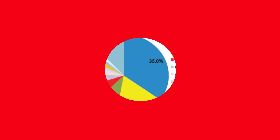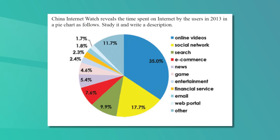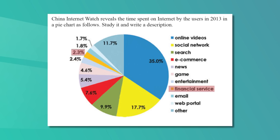You can check your workbook for similar activities. Turn to Unit 5, page 55, activity 5. China Internet Watch reveals the time spent on the internet by users in 2013 in a pie chart. Study it and write a description. The categories include: online videos, social network, search, e-commerce, news, games, entertainment, financial service, email, web portal, and other. You can write your answer using the same phrases we used in the previous description.